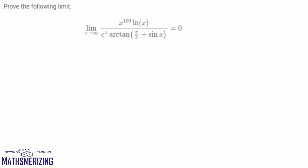The question is to prove that the limit as x tends to infinity of x to the power 100 times log x, upon e to the power x times tan inverse of pi by 3 plus sin x, is equal to 0.